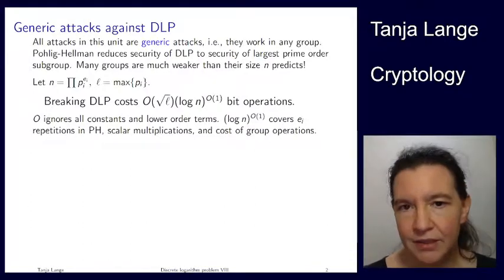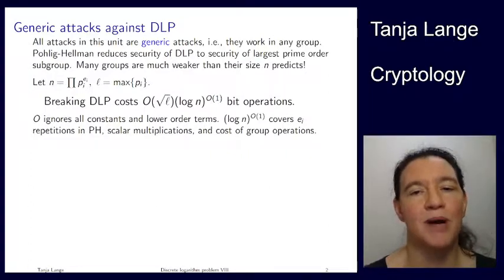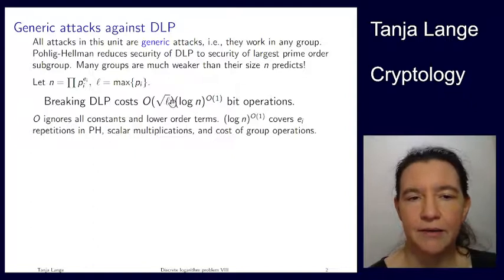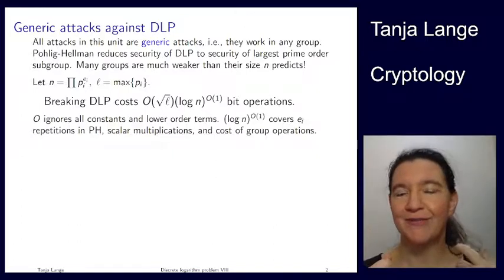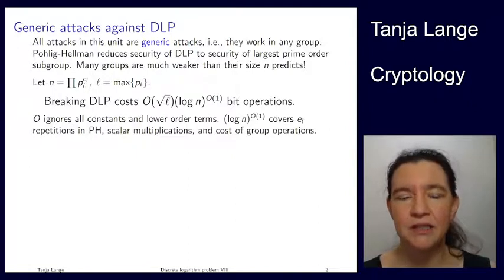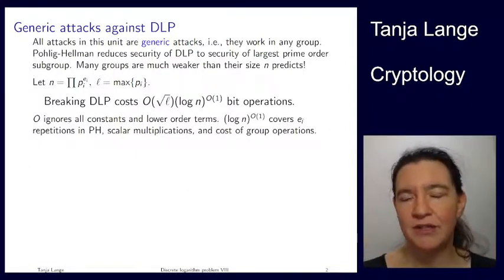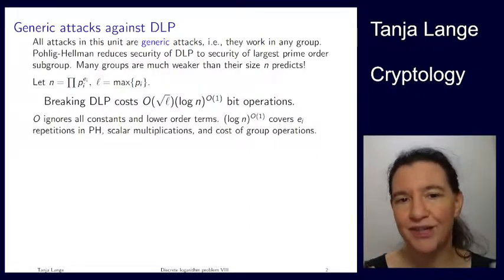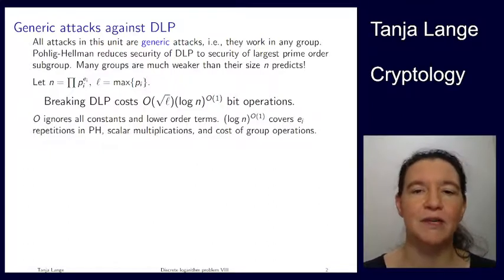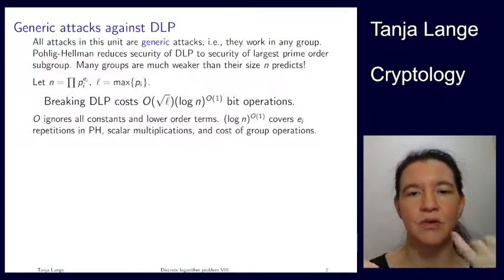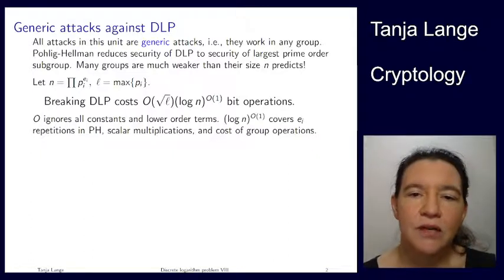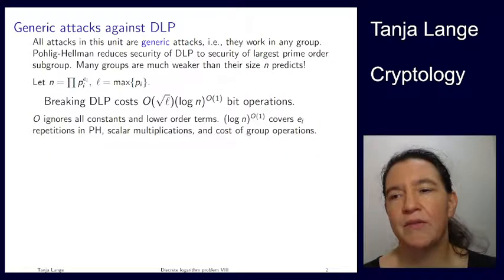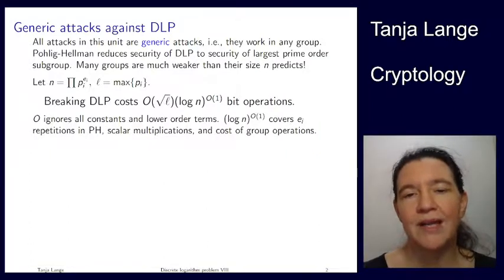O(1) means it's some constant, and this constant will depend on a bunch of things, including the log of n, where n is the group order. If you have any group in cryptography with a reasonably efficient representation, you probably need at least log n bits to represent it, else you wouldn't have n different elements. For elliptic curves you're having twice that many bits because you have the x-coordinate and the y-coordinate — so it's something on that scale, but that would be just a factor of 2 in front for the representation.